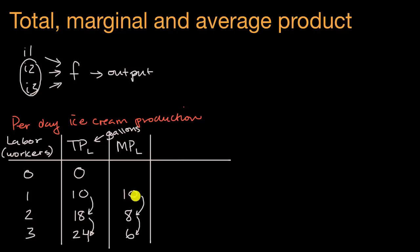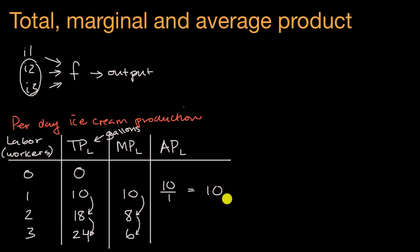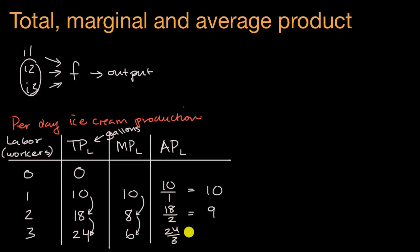The last concept I'm going to introduce is average product as a function of labor — AP for average product. All that is is our total product divided by our labor. When we have one worker, our total product is 10 gallons divided by one worker, so our average product per worker is 10 gallons. When we have two workers producing 18 gallons per day, our average product is 18 divided by two, which is nine gallons per worker per day on average. And in the last situation, it's 24 divided by three, which is eight gallons per worker per day on average.